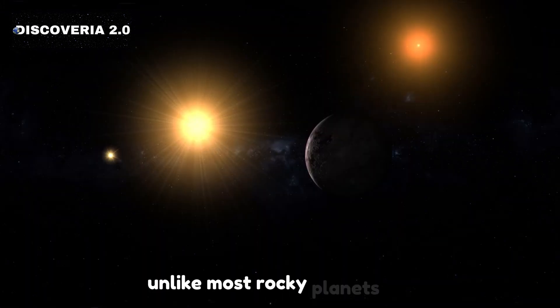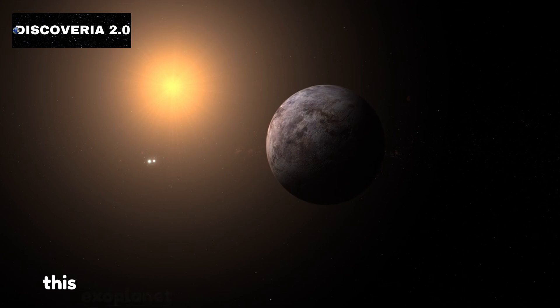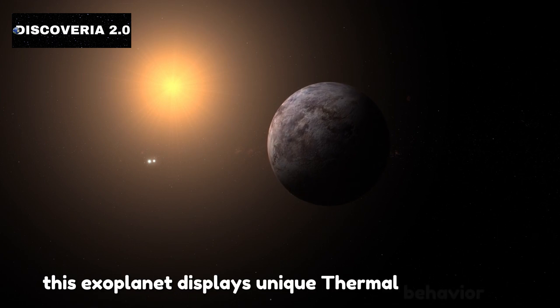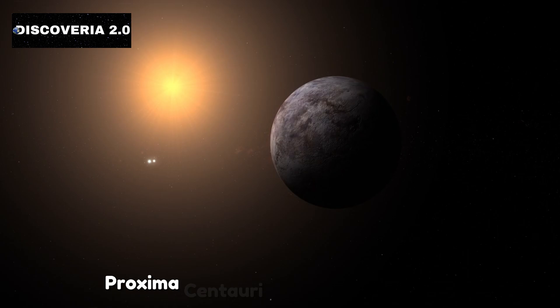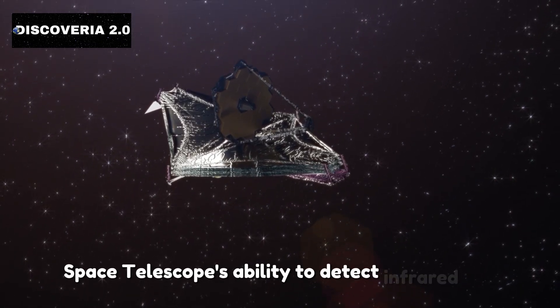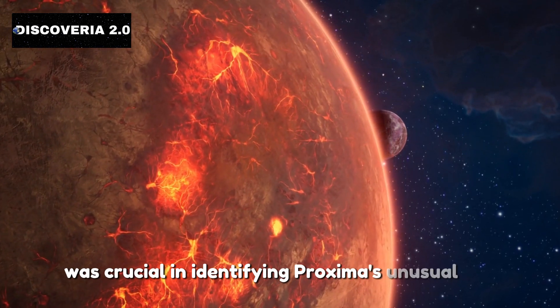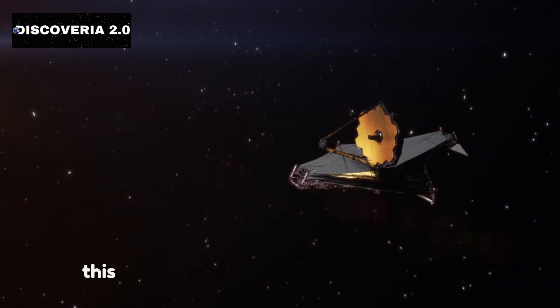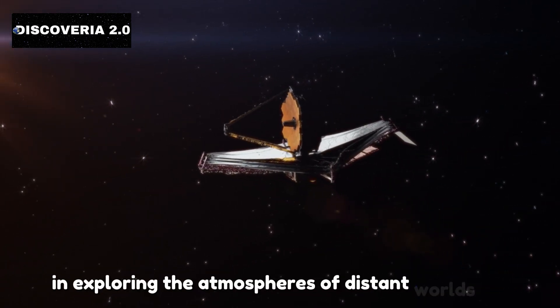Unlike most rocky planets, which absorb sunlight and release infrared energy, this exoplanet displays unique thermal behavior due to its interaction with its host star, Proxima Centauri. The James Webb Space Telescope's ability to detect infrared wavelengths was crucial in identifying Proxima's unusual thermal signature. This discovery highlights the telescope's significance in exploring the atmospheres of distant worlds.